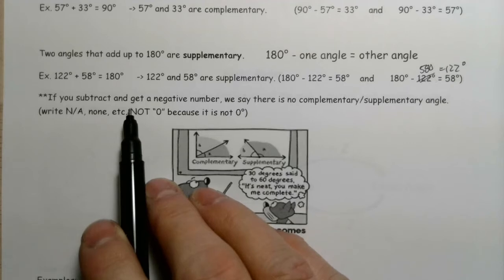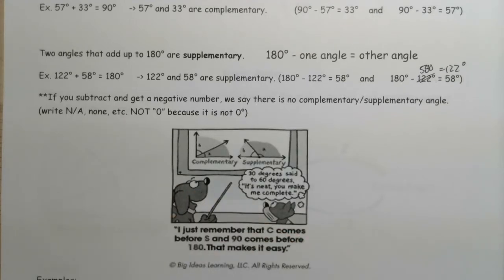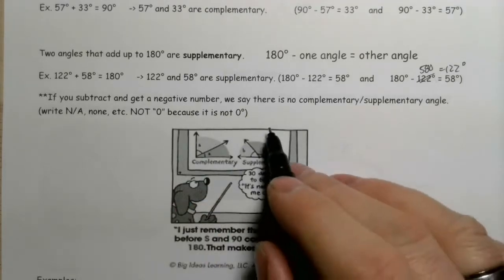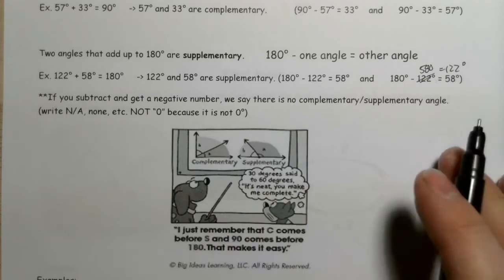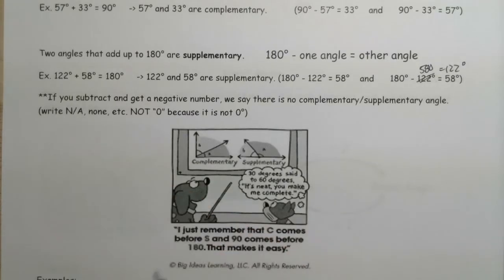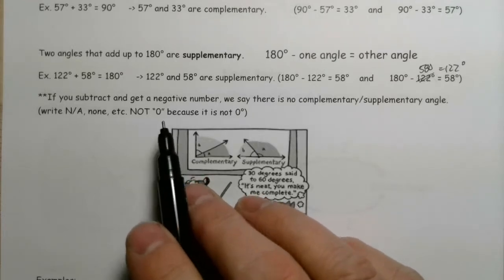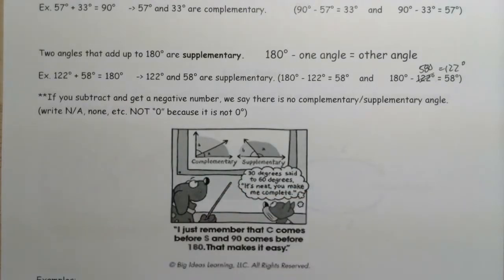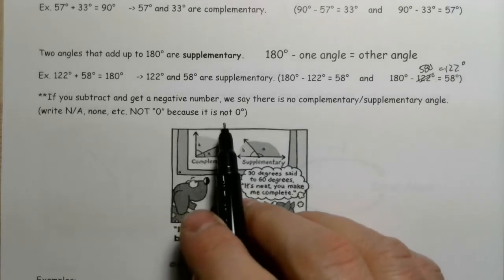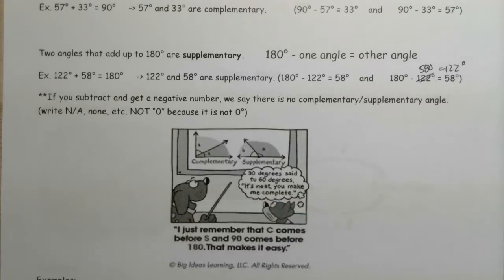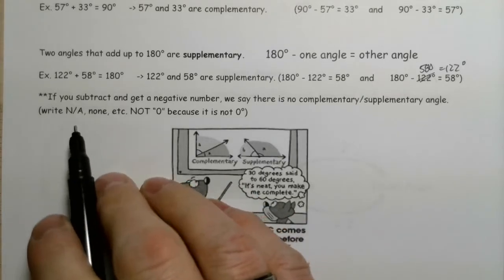If you subtract and get a negative number, we're going to say that there is no complementary or supplementary angle — it just doesn't exist. In that case, we're going to write NA, not applicable, or none. We're not going to write zero, because zero is actually the measure of an angle. There is a zero degree angle, and that's not what we're trying to say. We want to make sure we're using the correct responses — not applicable or none.